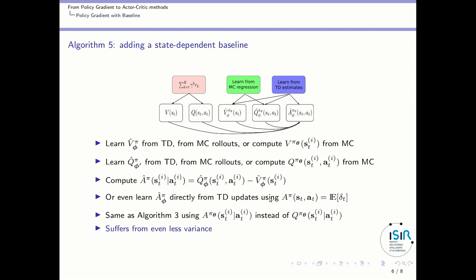So, this makes a really large number of possible algorithms to compute the advantage function, depending on whether you have a model of the value function, of the action value function, and how you estimate those models. And using this advanced function will suffer for even less variance, because you have subtracted the value function, which is one of those that provide the fewest variance.